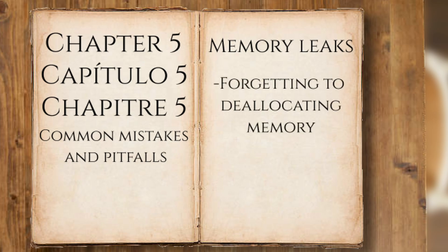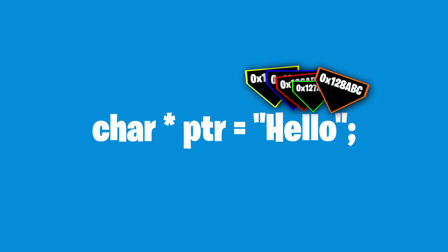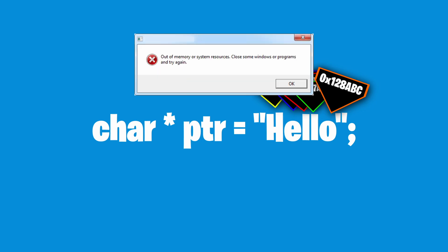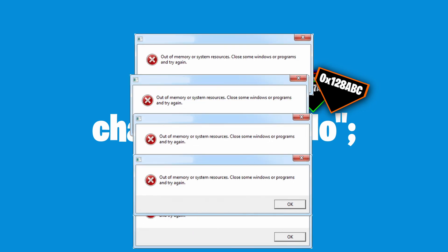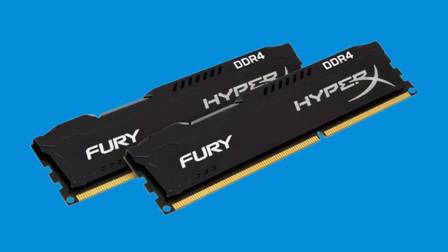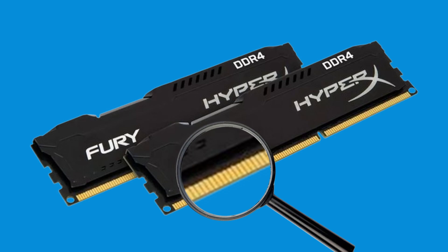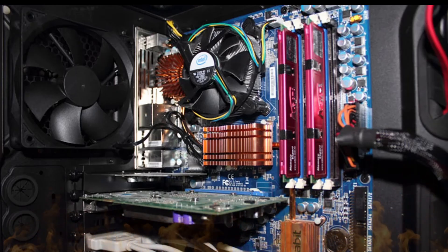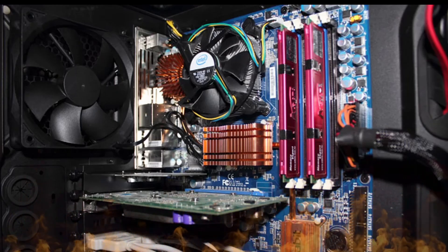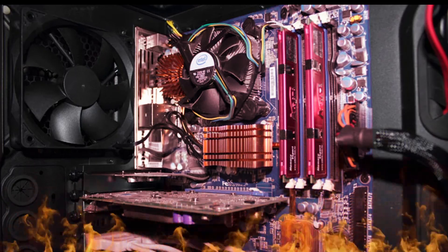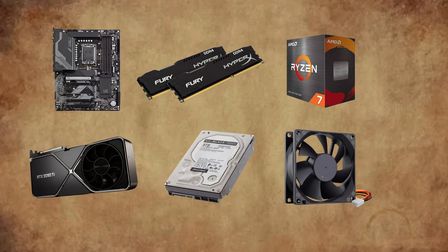Memory leaks happen when you forget to deallocate memory and just let it sit there. This means that you can't use the storage anymore as it's occupied, and this leads to the computer running out of memory. And sometimes it makes the RAM's memory overheat, which can destroy your RAM completely, and sometimes also leads to the melting of the motherboard. So don't let memory leaks happen — deallocate all the memory that you're not using.